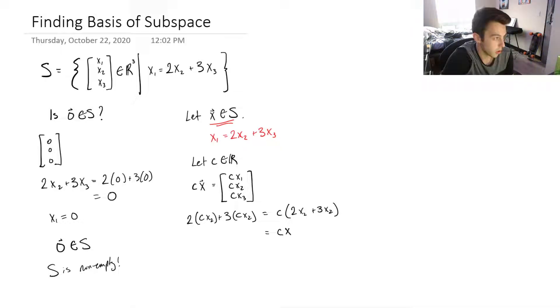So there, I've shown exactly what I'm showing that defines what the vector is in S, right? The first component is equal to 2 times the second component plus 3 times the third. So this shows that Cx is within S, and we're closed under scalar multiplication.